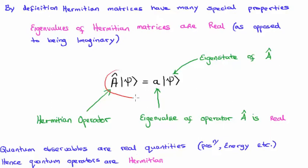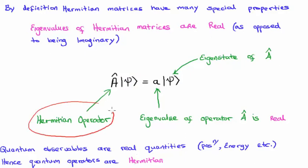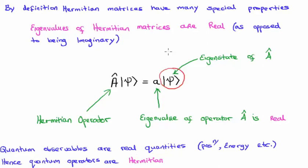Let's look at our eigenvalue equation again. This is what we get when an observable acts on a quantum state or a ket. Here we have the observable A hat acting on the quantum state psi. We know that A hat has to be a Hermitian operator because the eigenvalue small a has to be real. So the eigenvalue of the operator capital A is a real quantity. And of course the ket psi is an eigenstate, eigenket, eigenfunction, or eigenvector of the Hermitian operator A hat. So to say that again: quantum observables are real quantities such as position and energy, hence the operators must be Hermitian.